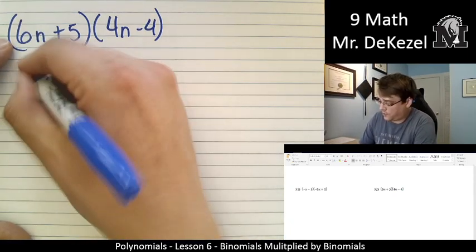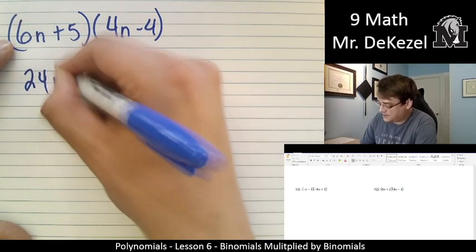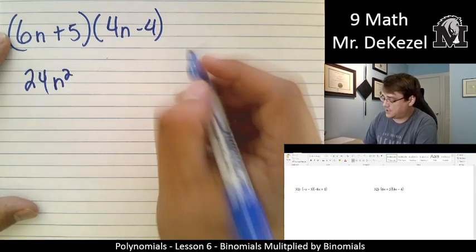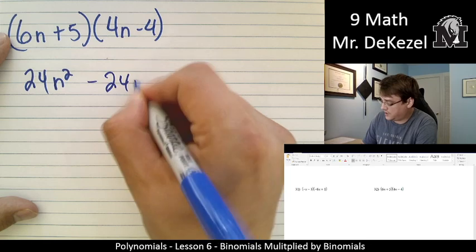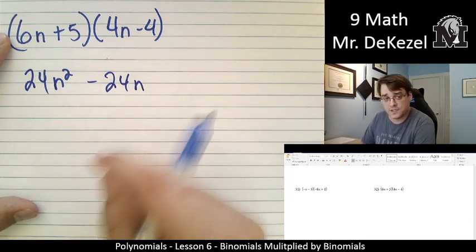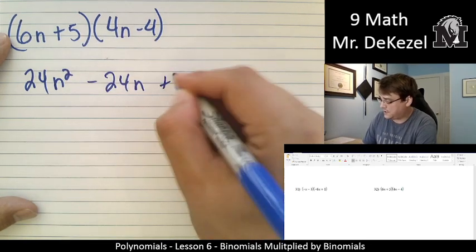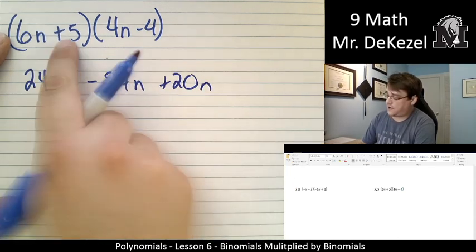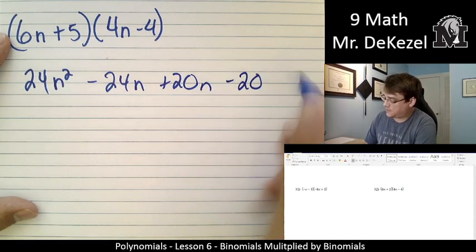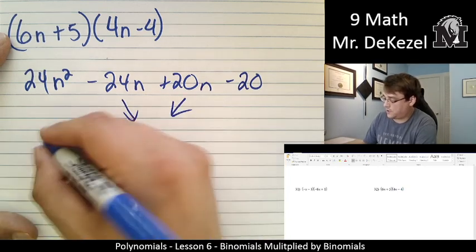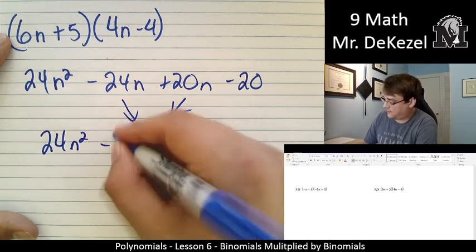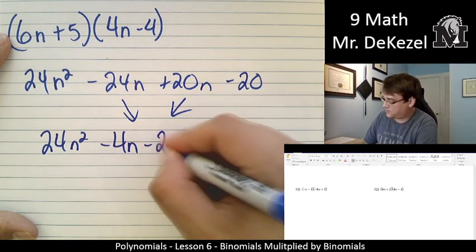(6N + 5)(4N - 4). 6 times 4 is 24N². N times N is N². 6N times -4. That's -24N. And the N comes along. 5 times 4 is 20N. And this N then comes along. And 5 times -4 is -20. We're going to combine our like terms. 24N² - 4N - 20.